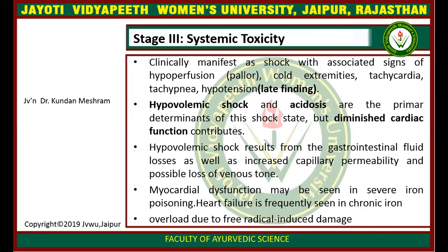Stage 3 includes systemic toxicity. Clinically it manifests as shock associated with signs of hypoperfusion, including cold extremities, tachycardia, tachypnea, and hypotension. Hypovolemic shock and acidosis are the primary determinants of this shock state, though diminished cardiac function also contributes. Hypovolemic shock results from gastrointestinal fluid losses as well as increased capillary permeability and possible loss of venous tone.